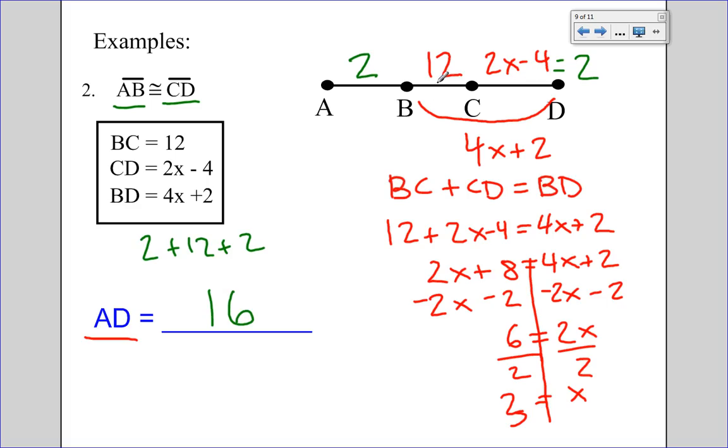Now I know some of you might think, well, how can BC be 12? It looks longer than AB, which is only 2. Well, in geometry, you have to remember, you can never assume from a picture that anything is bigger or smaller. You can only go off of what's given to you.